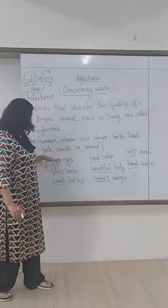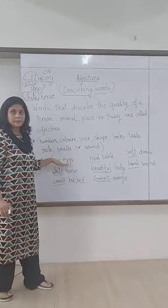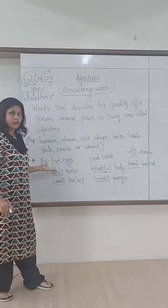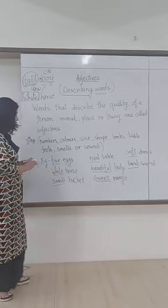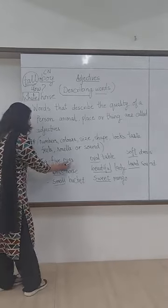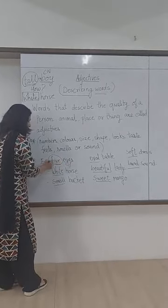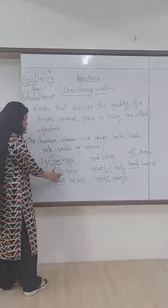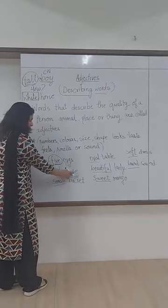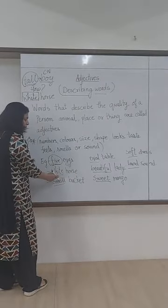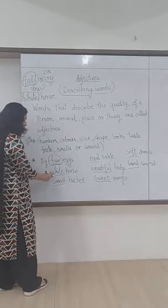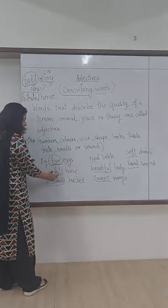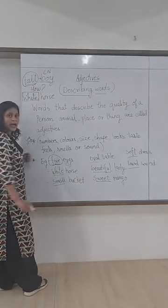For example, 'five eggs' — how many eggs are there? Five. So 'five' is describing the eggs, and so 'five' is an adjective. 'White horse' — the horse is white in color, so 'white' is describing the horse and it is an adjective.